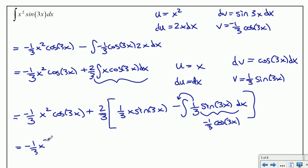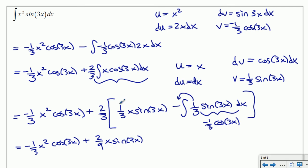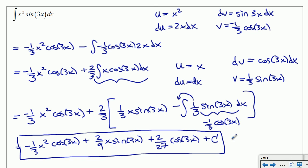Putting it all together: negative one third x squared cos 3x, then distributing the two thirds into the bracket gives plus two ninths x sine 3x. For the last term, multiplying two thirds times negative one third times negative one third gives a positive result: 2 over 27 times cos 3x. So the final answer is negative one third x squared cos 3x plus two ninths x sine 3x plus two twenty-sevenths cos 3x plus c.